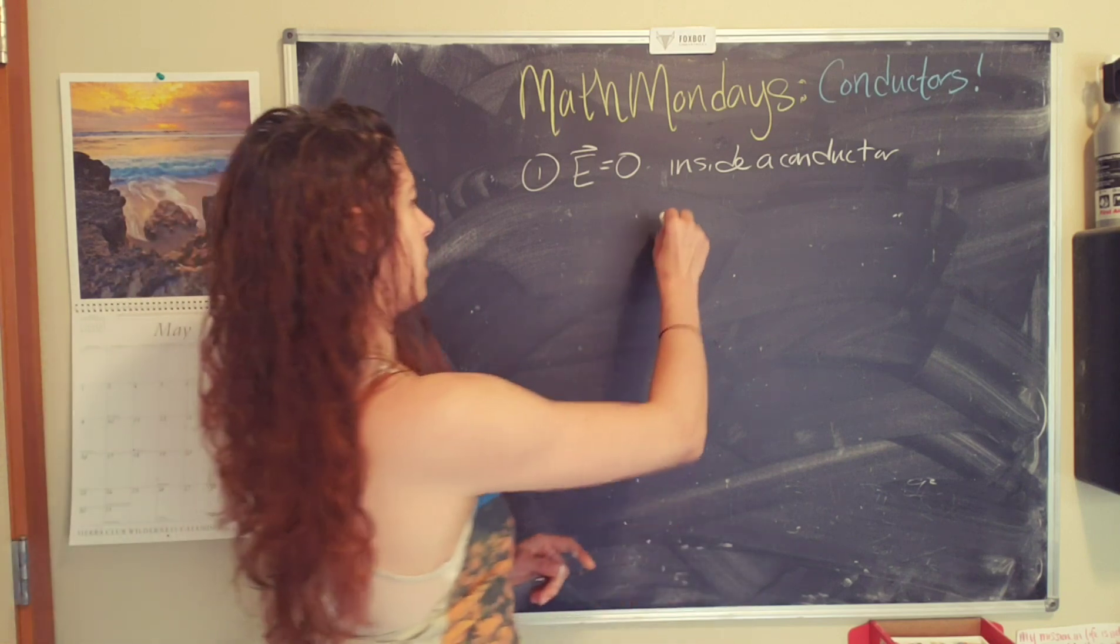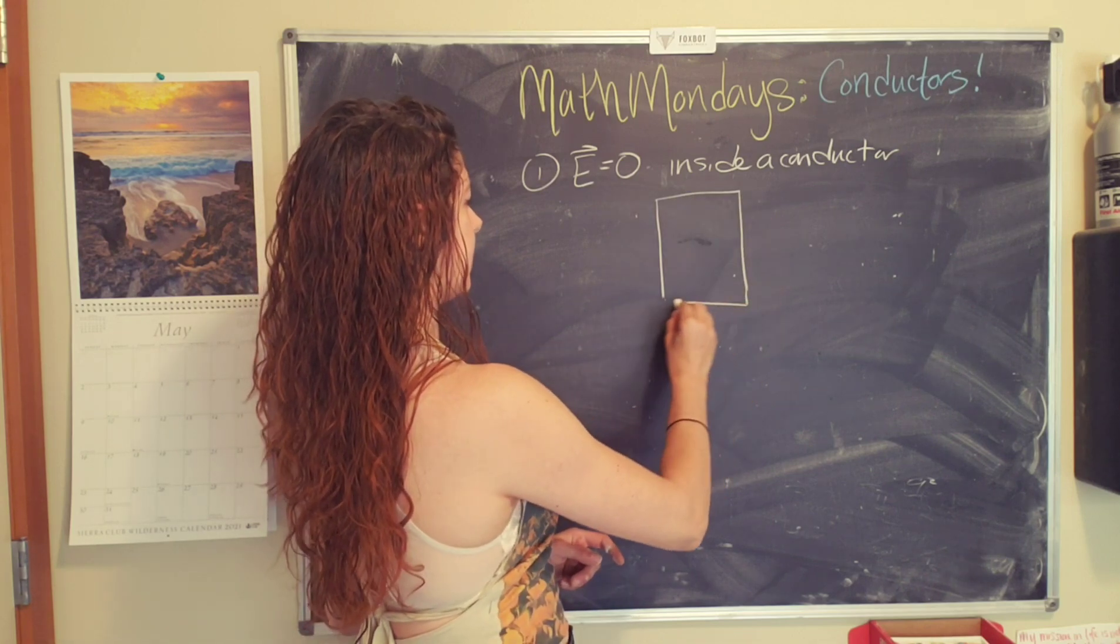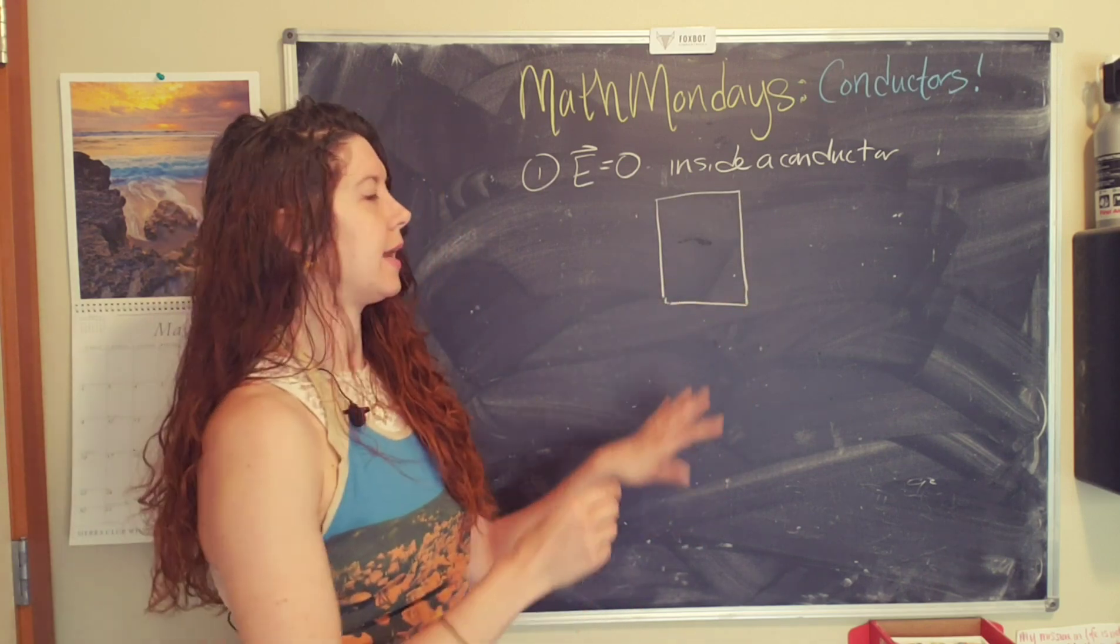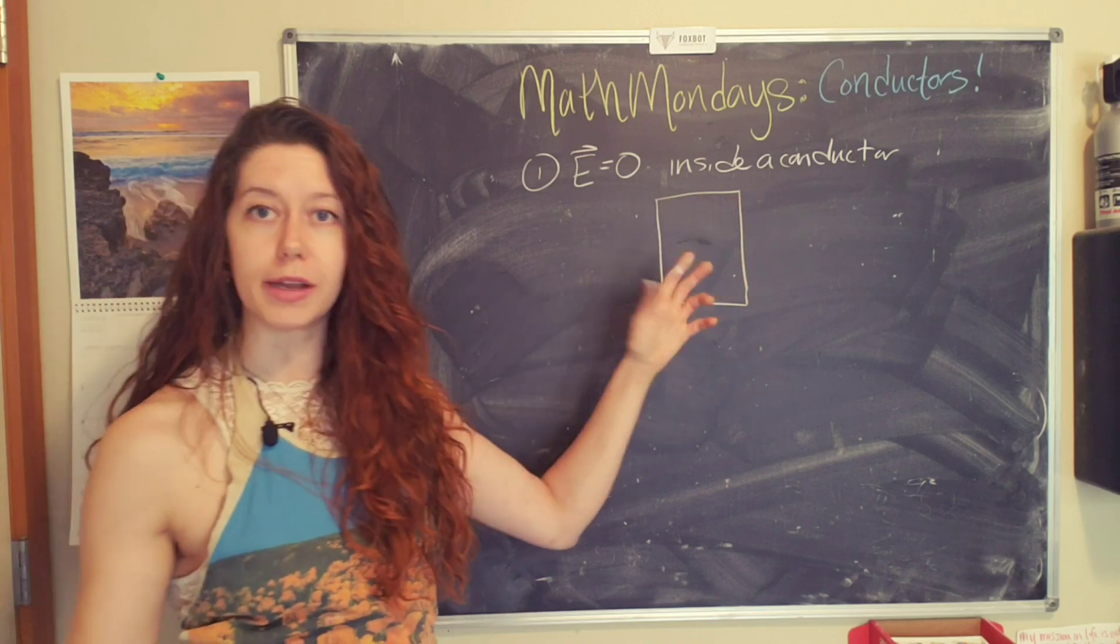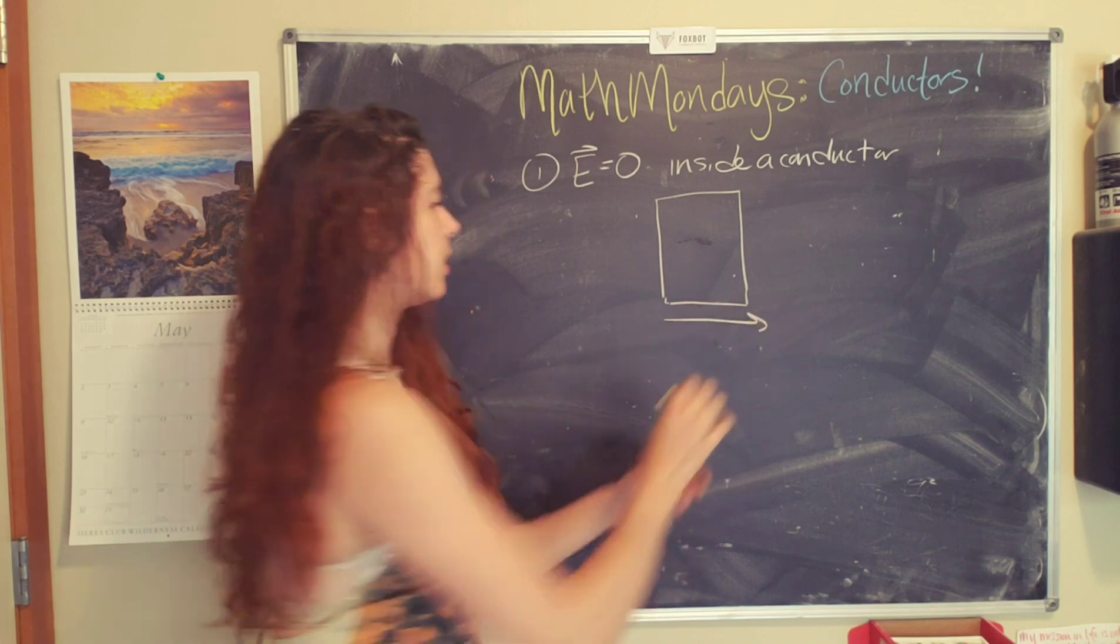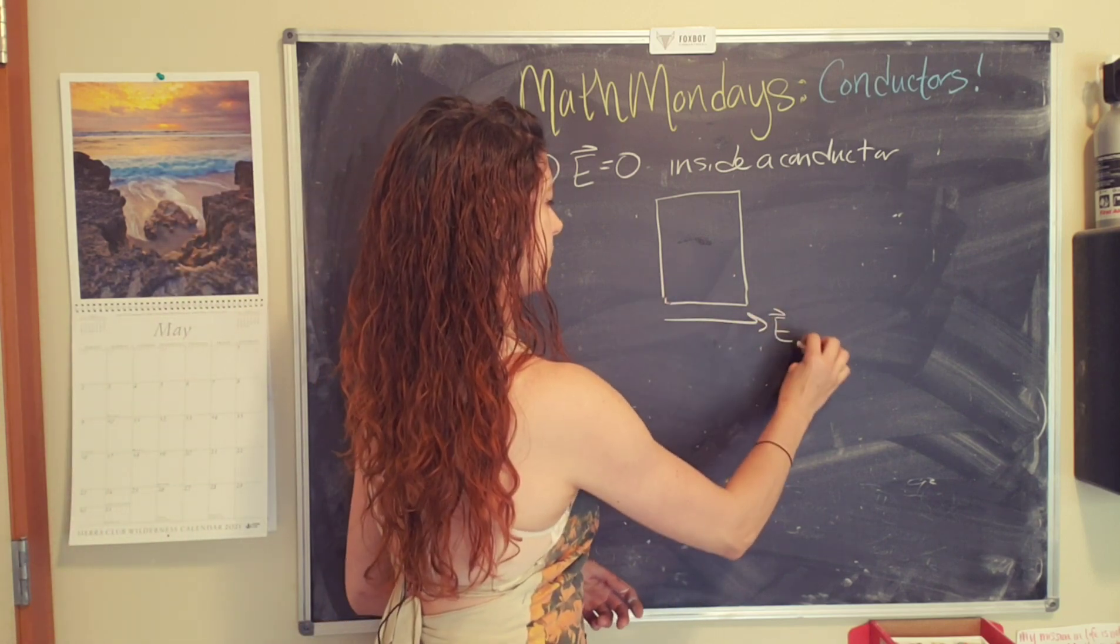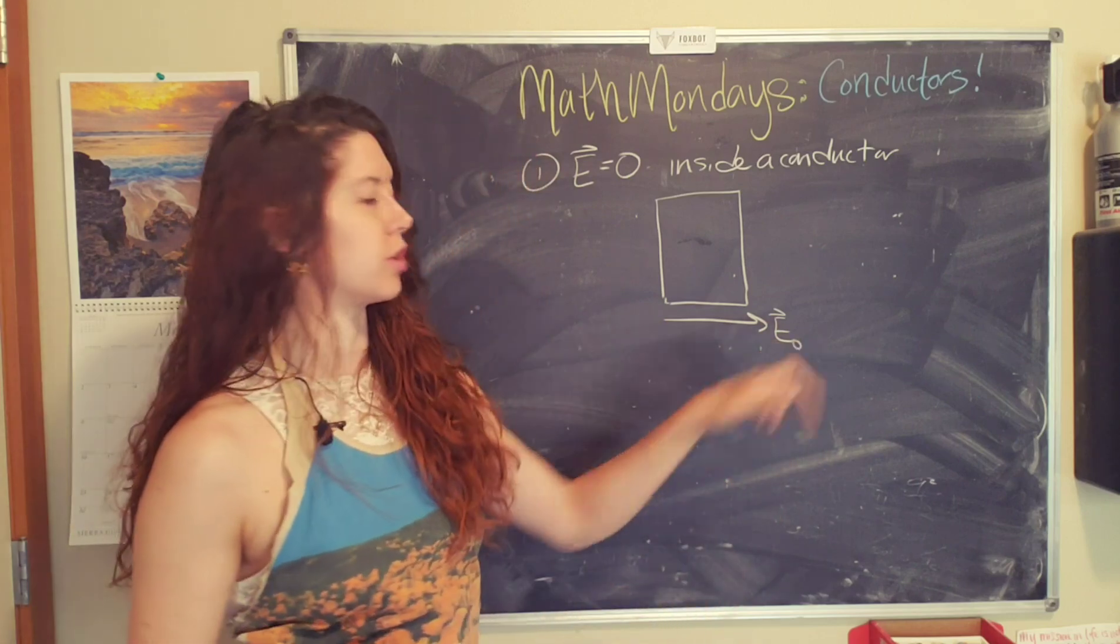Okay. Let's look at an example. So let's say we have a rectangular shaped conductor, and it has these free charges, like free electrons just kind of floating about. And we put this conductor in an external electric field. We'll call it E naught, and it has a direction like this.